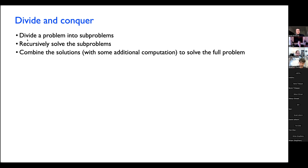The general idea is that we've got some problem we want to solve. We're going to divide it into subproblems, then solve those subproblems using recursion. The algorithm we're applying is the algorithm we're now describing, until we get down to some base case that can just be solved trivially. Once we've recursively solved these subproblems, we're going to combine the solutions to solve the full problem. When we do that, we might have to do some additional computation — the answer won't in general be immediately clear just from having solved the subproblems; we may have to do some additional work to put those solutions together.